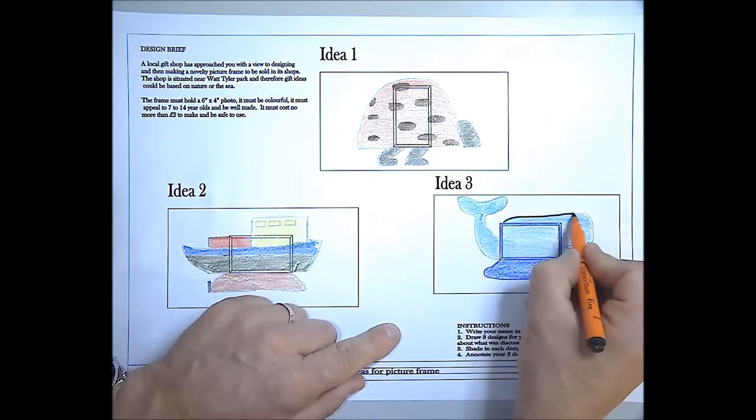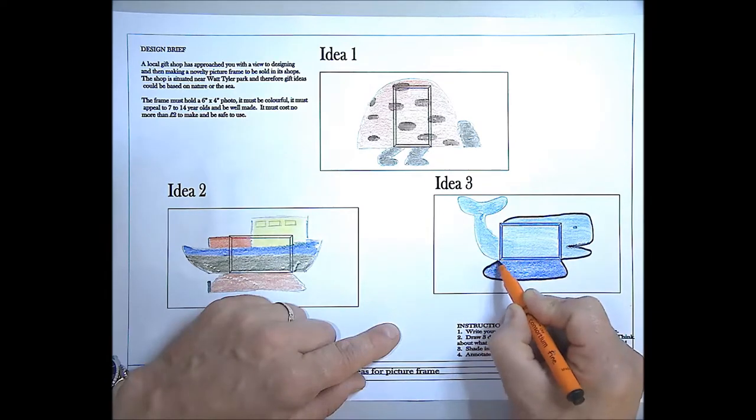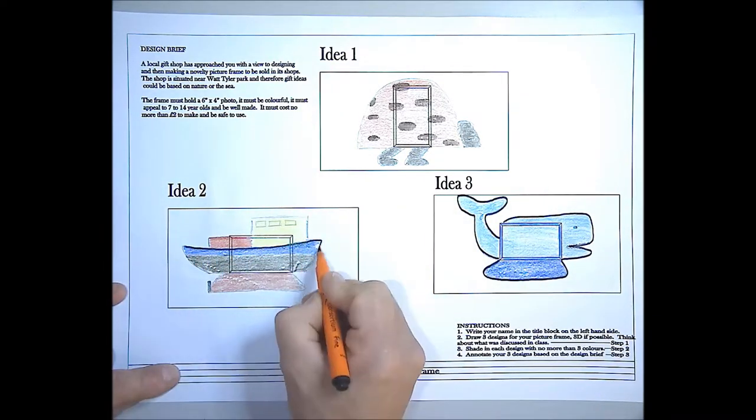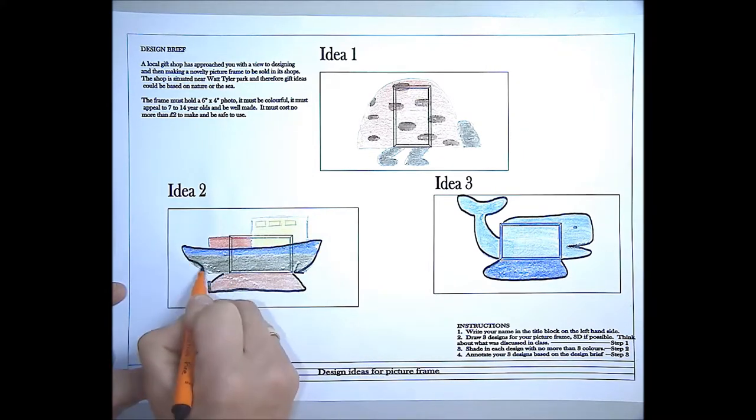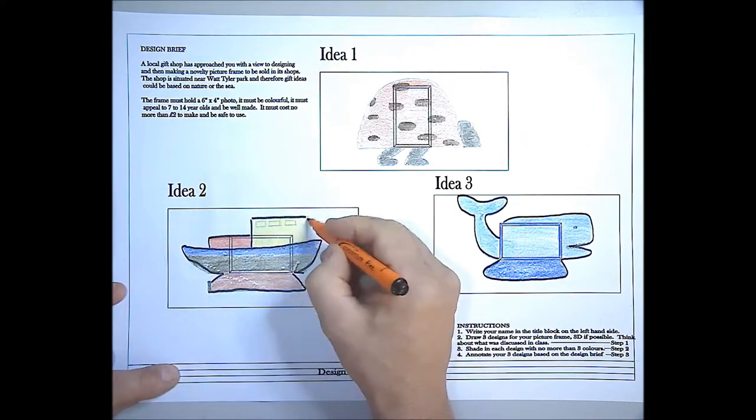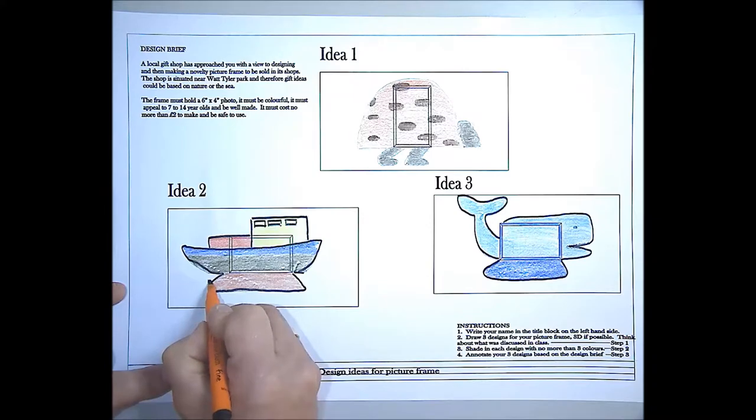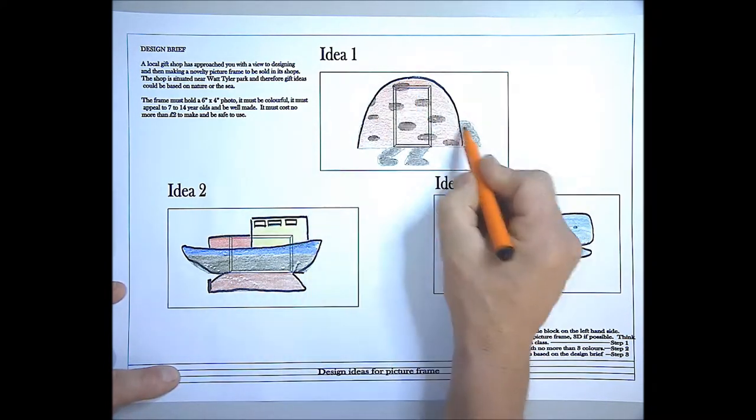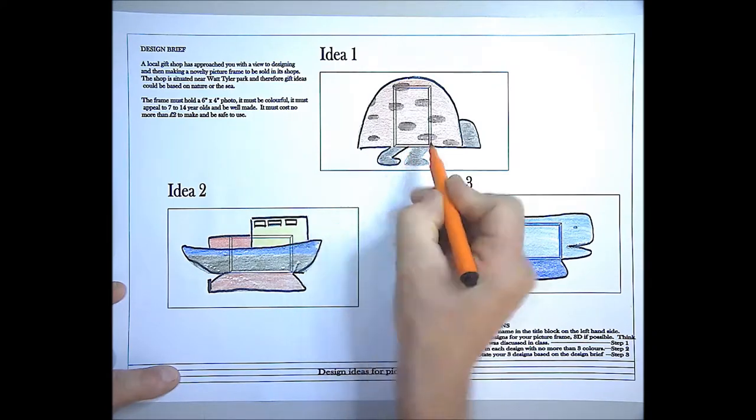Right, when you've finished, just one little technique is that we can go round everything with a black felt pen. Try and keep the felt pen fairly thin. But you can see that if we just go round everything with that black pen, it just accentuates what you've done and makes it all stand out.